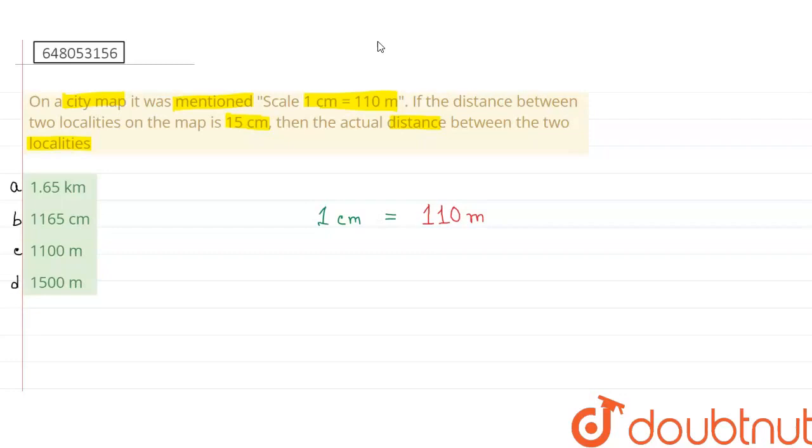सिमिलरली, अगर मैं बोलूं कि city map में मुझे दो places के middle में distance 2 cm दिख रहा है, तो actual में उन दोनों places के middle का distance क्या हो जाएगा? 2 into 110 equals to 220 m.